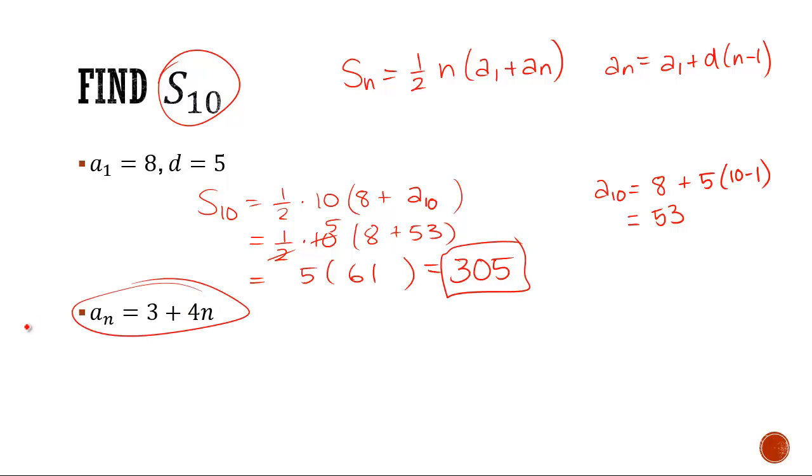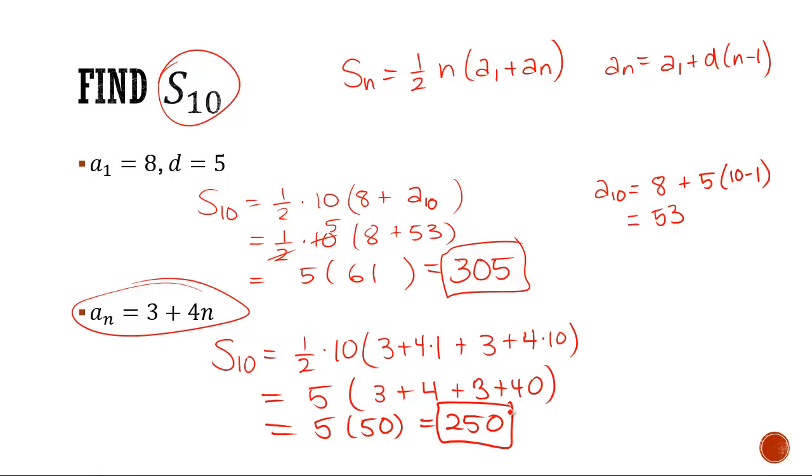Now, we have our nth term formula. Let's try it this way. Find S₁₀. That's half of 10 terms. And then the first term, which is 3 plus 4 times 1, plus the last term, which is 3 plus 4 times 10. And when you calculate that out, you'll have the desired term. The sum is 250.